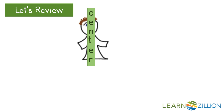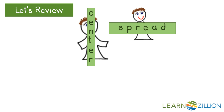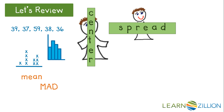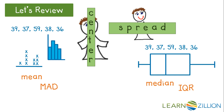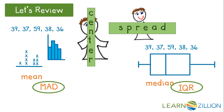Typically, both a measure of center and a measure of spread are used to describe a set of data. The mean and mean absolute deviation are paired together to describe data sets, or those represented by line plots and histograms. The median and interquartile range are often used for data sets or those represented by box plots. In higher level statistical analysis, the range is used less frequently in favor of the other measures of spread.